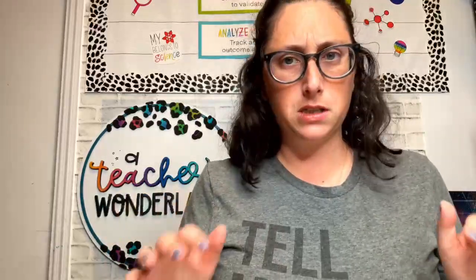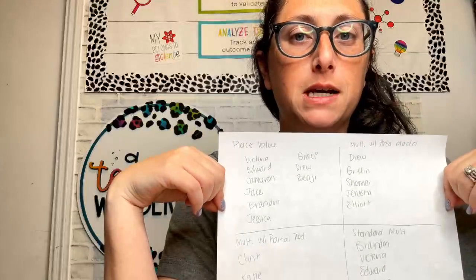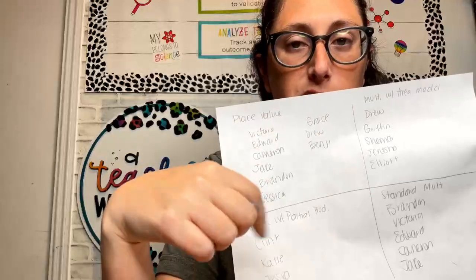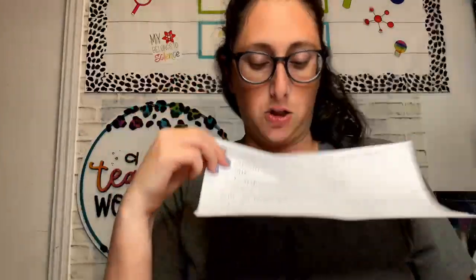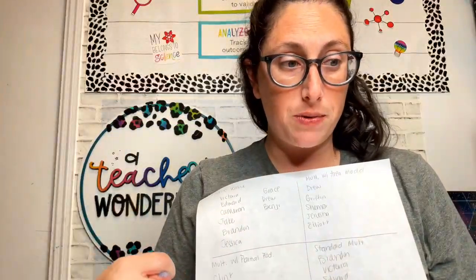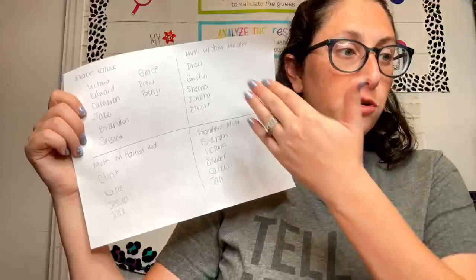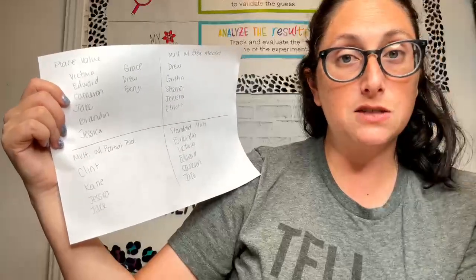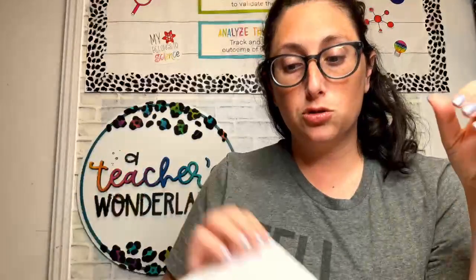Okay, if you're still working you can pause this video. Here are my groups — my four groups organized based off of skill. Notice how some of them are repeated. Like Jake appears twice because he struggled with partial products and with the other standard. I have Drew appearing in two of them, and Jessica appears twice — that's fine. There's only one of you, so you're only going to be teaching one group at a time.